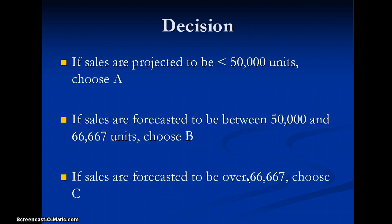If our sales are projected to be less than 50,000, we should choose process A. If our sales are to be between 50,000 and 66,667, we would choose process B. And finally, if we had very high sales forecast at over 66,000, we would choose process C.